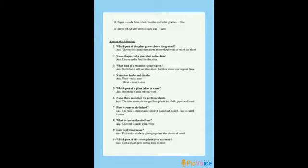Answer the following. First: which part of the plant grows above the ground? The part of a plant that grows above the ground is called the shoot. Second: name the part of a plant that makes food. Leaves make food for the plant. Third: what kind of stem does a herb have? Herbs have soft and thin stems, but the stems can support them. Fourth: name any two herbs and shrubs. Herbs are small plants with soft and thin stems — examples: Tulsi, mint.